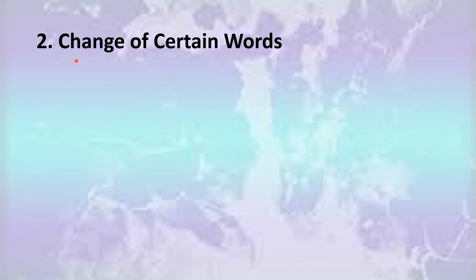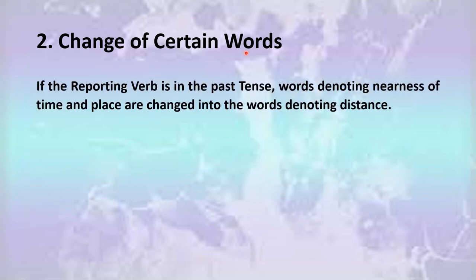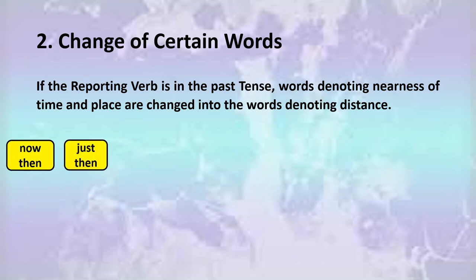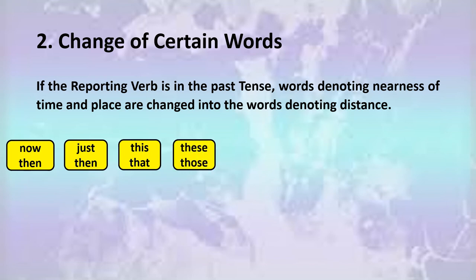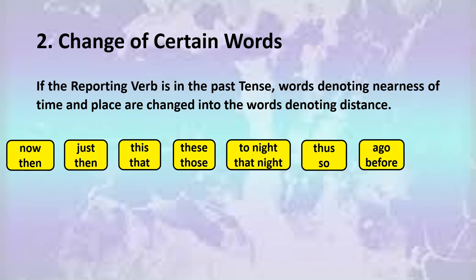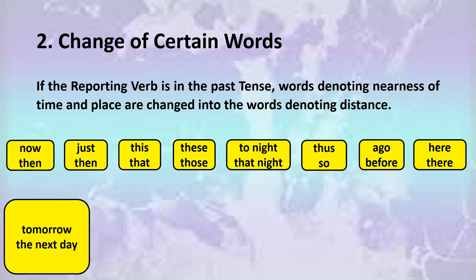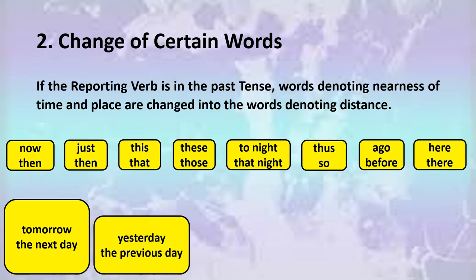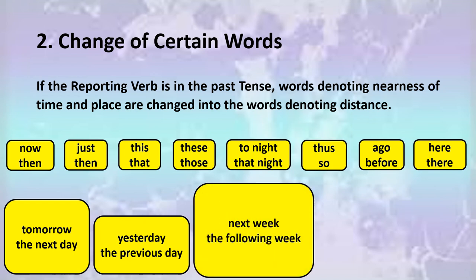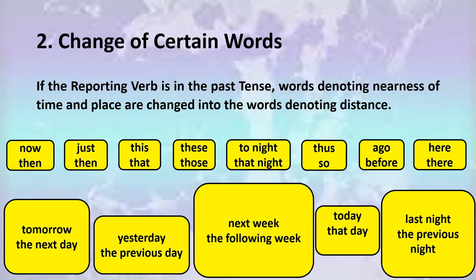While converting a sentence from direct into indirect speech, we change certain words also. If the reporting verb is in the past tense, the words denoting nearness of time and place are changed into words denoting distance. Now is changed into then. Just is changed into then. This becomes that. These become those. Tomorrow becomes the next day. Yesterday becomes the previous day. Next week becomes the following week. Today becomes that day. And last night becomes the previous night.